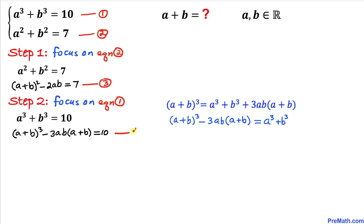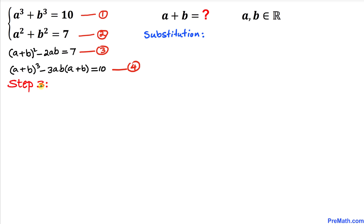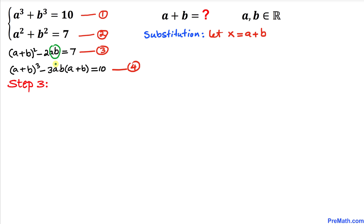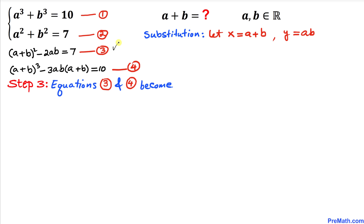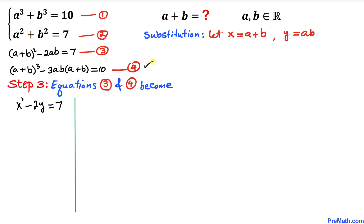Let's make things simple by making some substitutions. Let x = a+b and y = a×b. After substitution, equation 3 becomes x² − 2y = 7, and equation 4 becomes x³ − 3xy = 10.